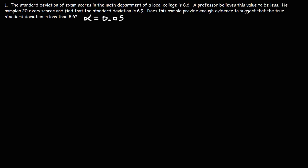So let's write down what we know. The hypothesized standard deviation is 8.6, which means the hypothesized variance is 8.6 squared. The sample standard deviation is 6.9, which means the sample variance is 6.9 squared.